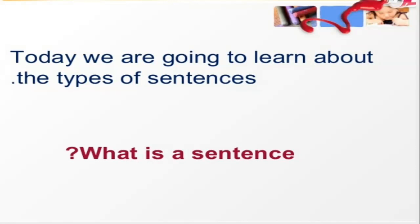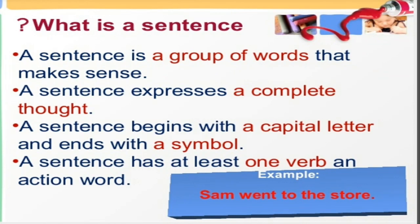Before we start the types of sentences, the first thing we should know is: what is a sentence? A sentence is a group of words that makes sense. It consists of a group of words taken together which shows some meaning, which has some sense, some thought. A sentence expresses a complete thought — it is very important that a sentence should express a complete thought, not an incomplete one.